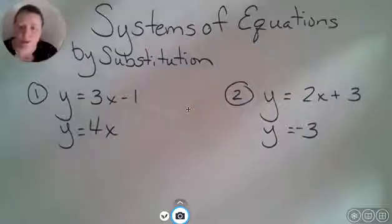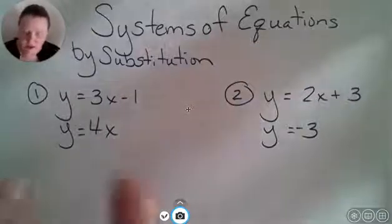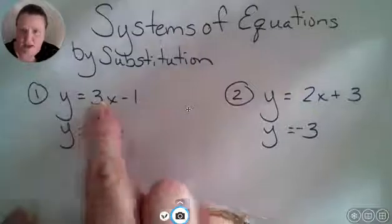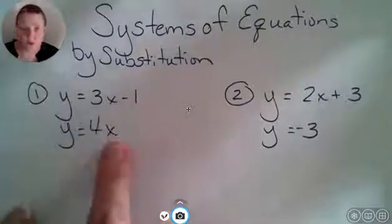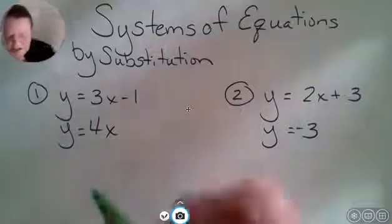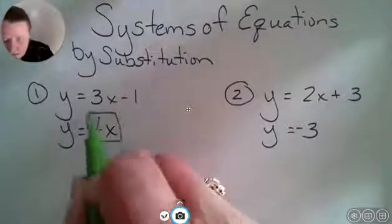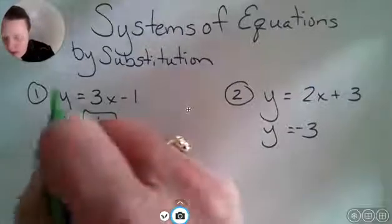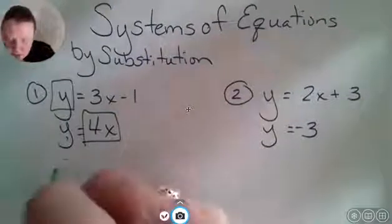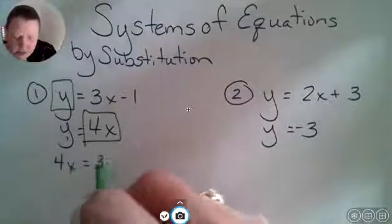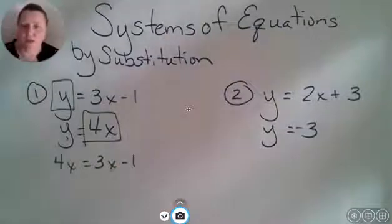What we're going to do is substitute. For instance, if this y equals this, then this y and this y are the same. These two also have to equal each other. I am going to substitute this, because it equals y, in place of that. So I'm going to rewrite it: 4x is equal to 3x take away 1.